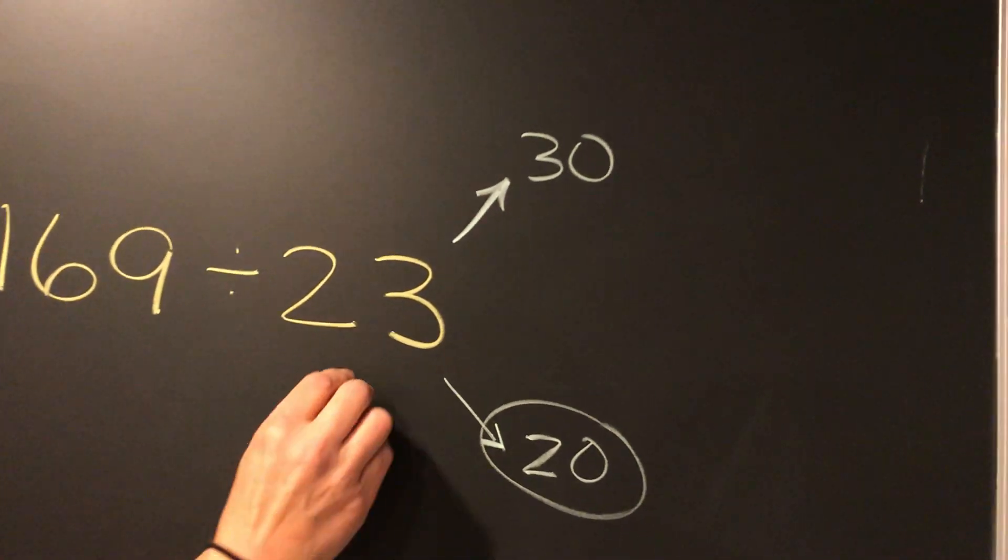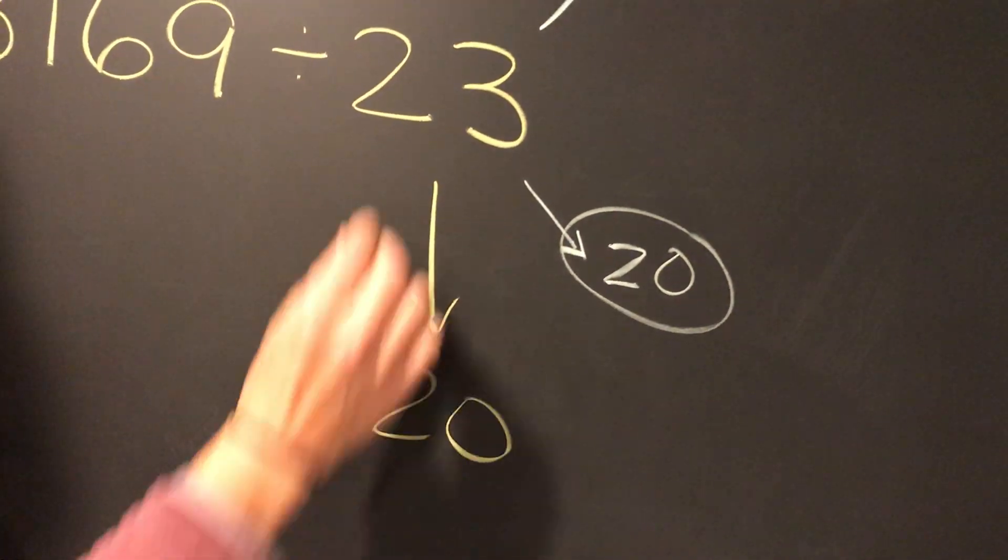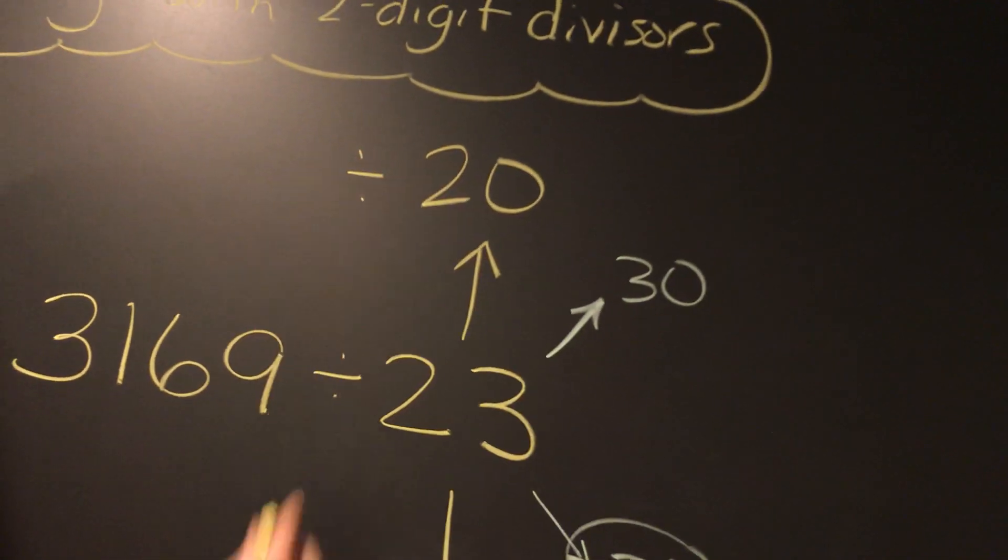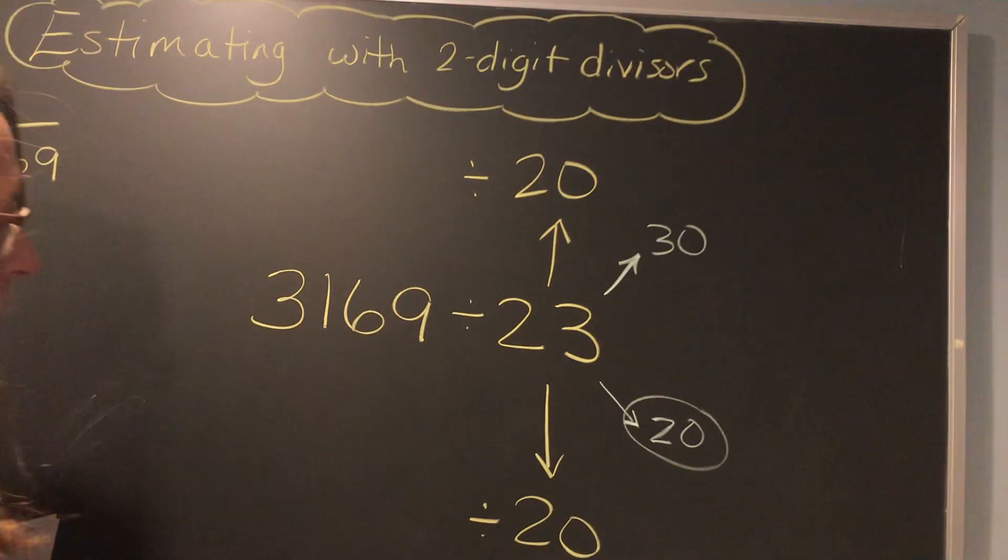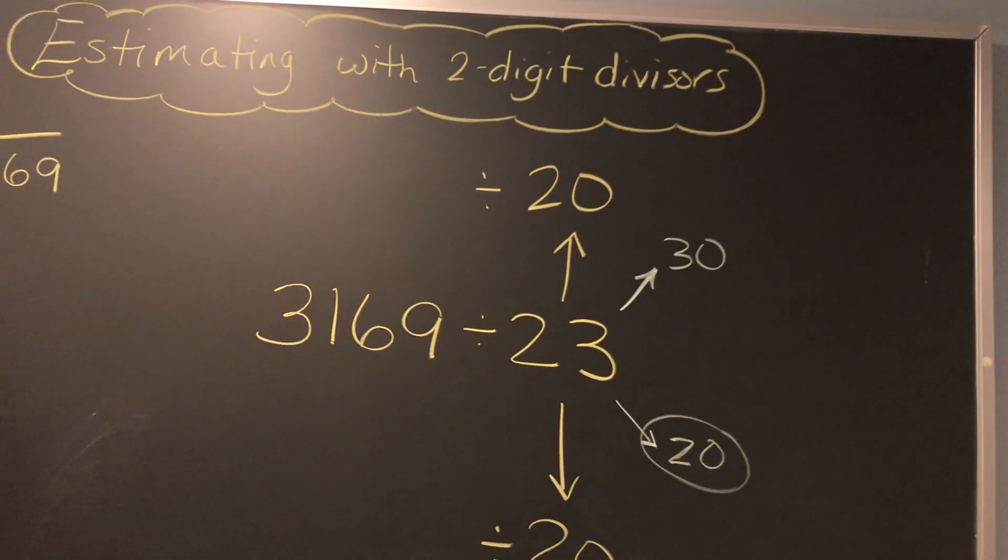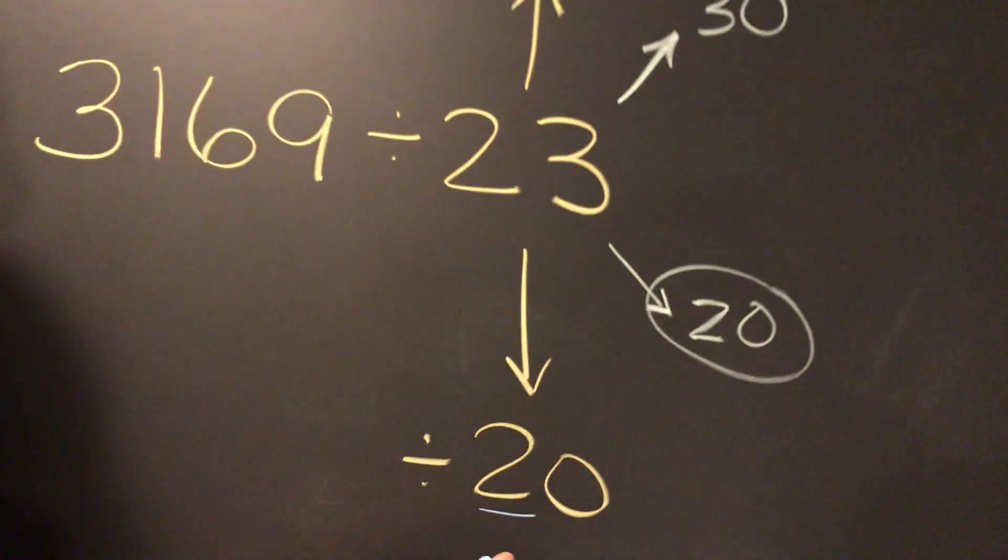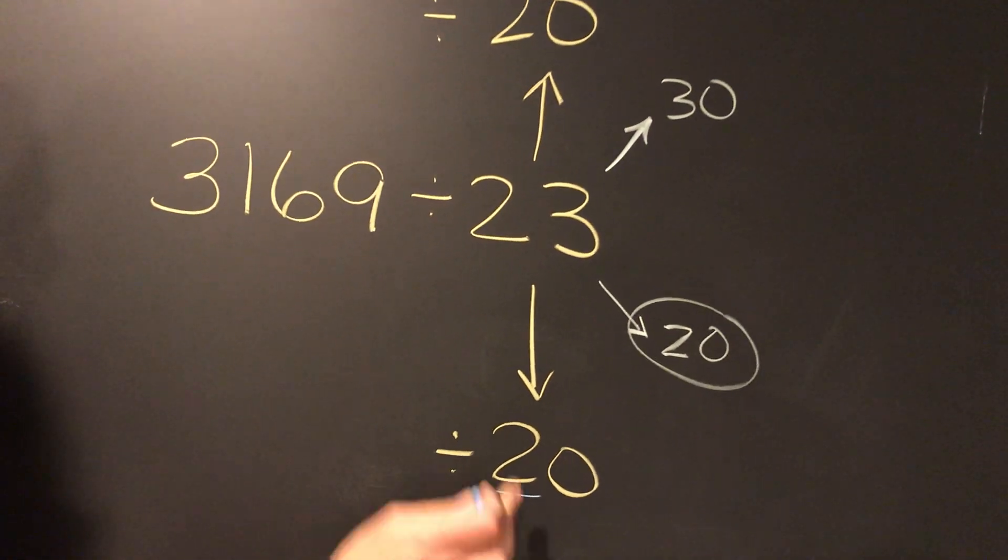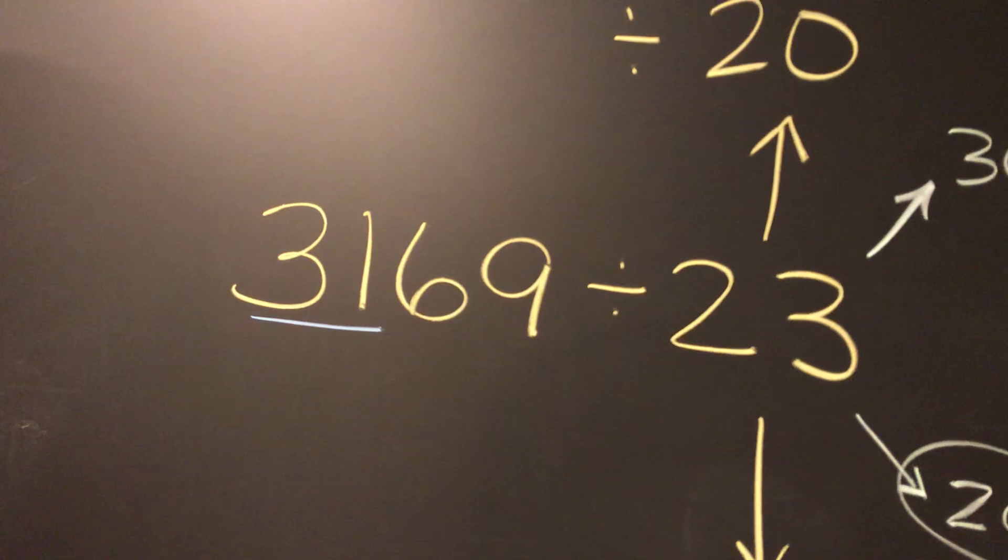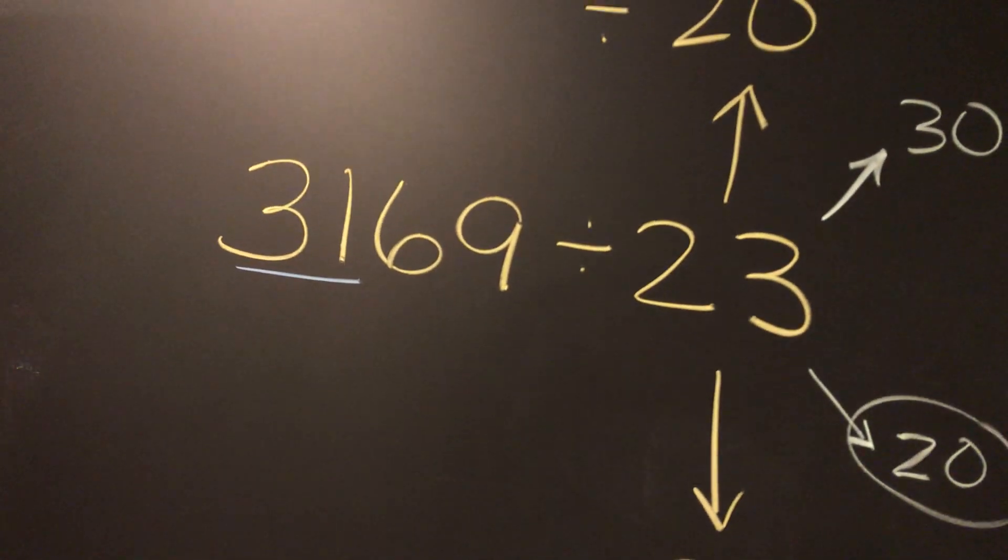We're going to write our underestimate division problem underneath and our overestimate division problem on the top. Once we've figured out our divisor, we're going to change our dividend to something that's compatible with two. To make it compatible with two, you're going to underline the two in your rounded divisor and the two digits in the front of your dividend. Then we're going to look for a multiple of two that's closest to 31.